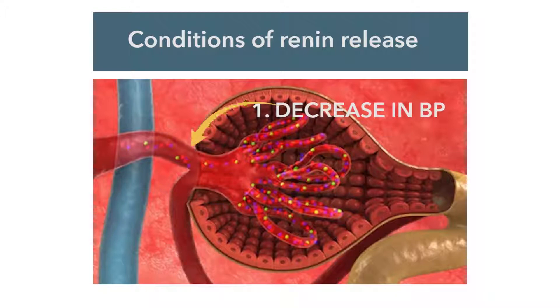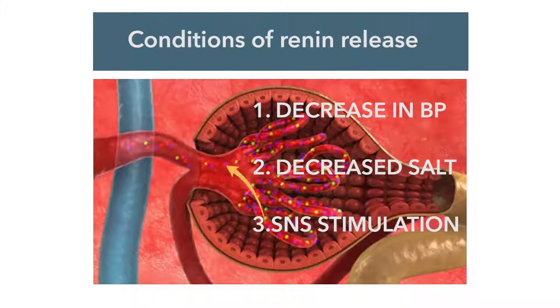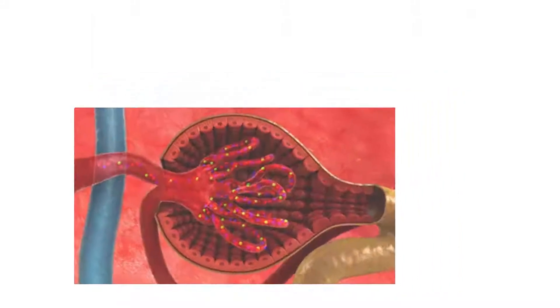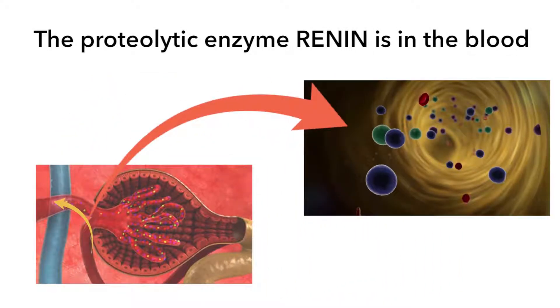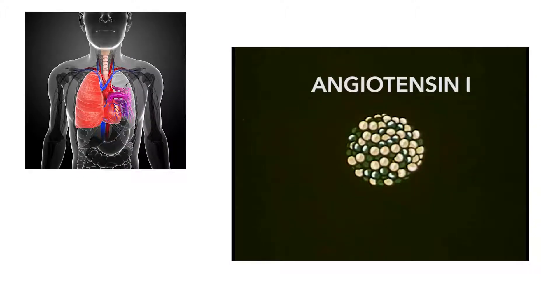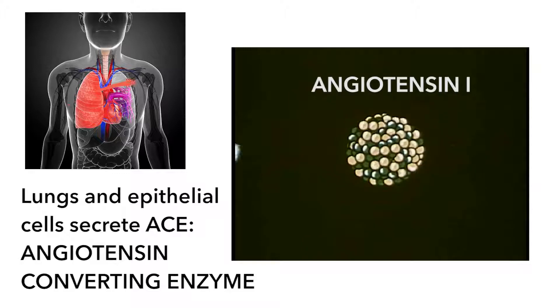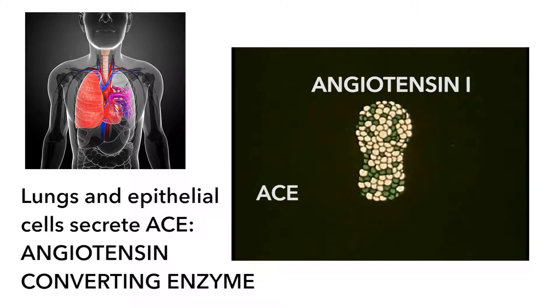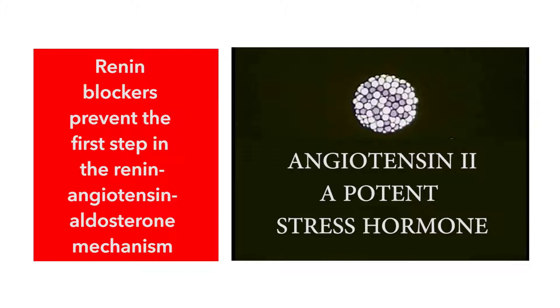In our lesson about the ACE inhibitors, we went into detail about the renin-angiotensin-aldosterone system — here is a summary. When blood pressure is too low at the level of the kidneys, or if there is too little salt, or if there is a fight-or-flight adrenaline response, the kidneys release renin. Renin travels through the bloodstream, finds angiotensinogen, and enzymatically cleaves it to angiotensin-1, which is then converted by angiotensin-converting enzyme (ACE) to angiotensin-2, the super stress hormone.